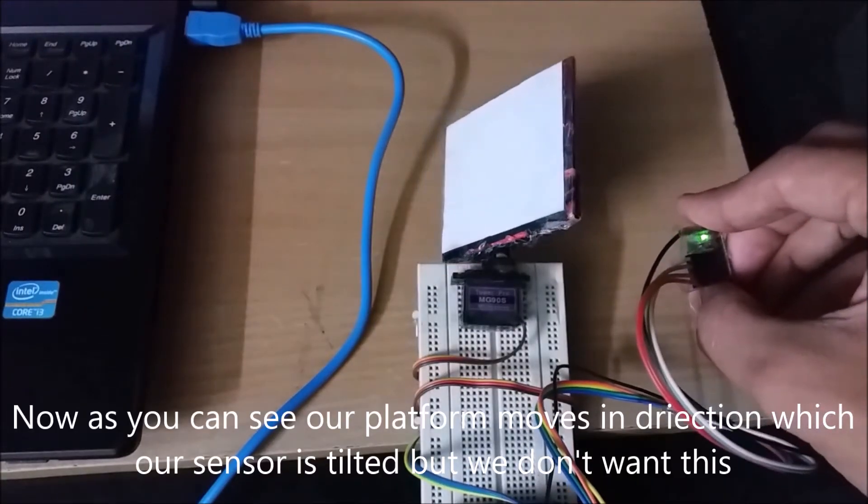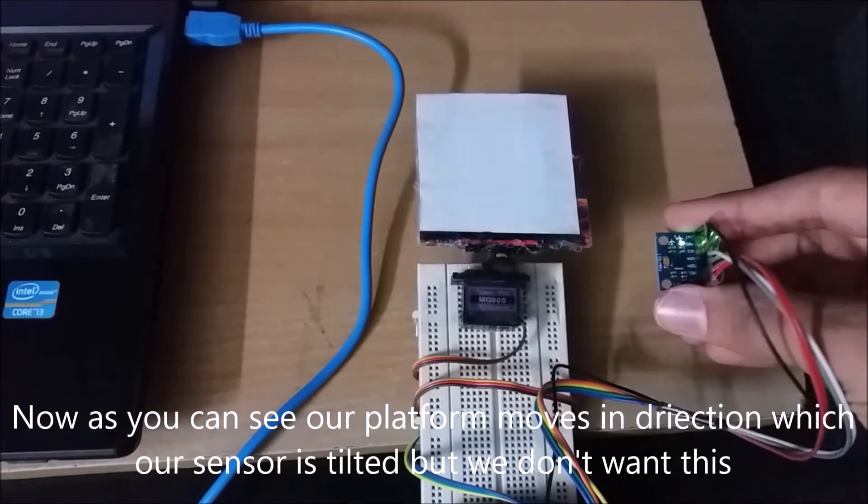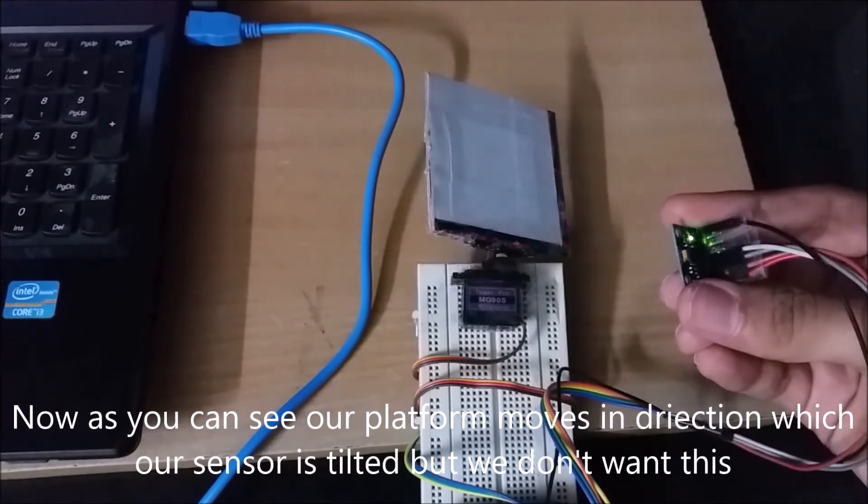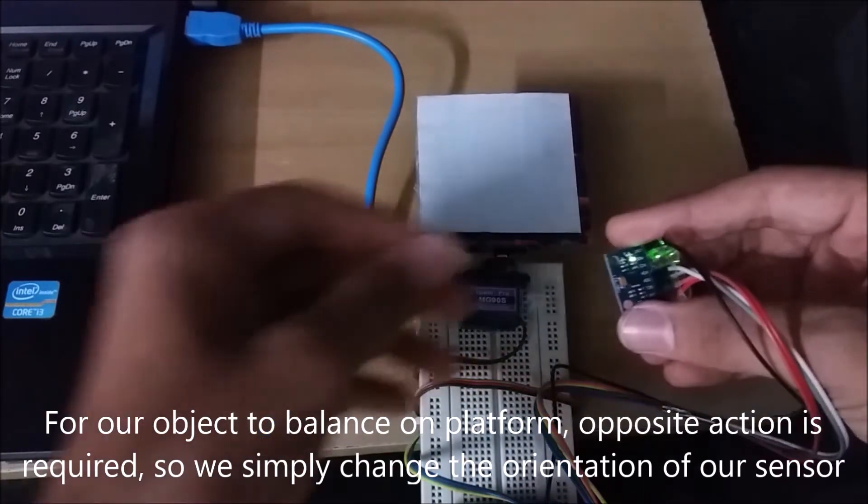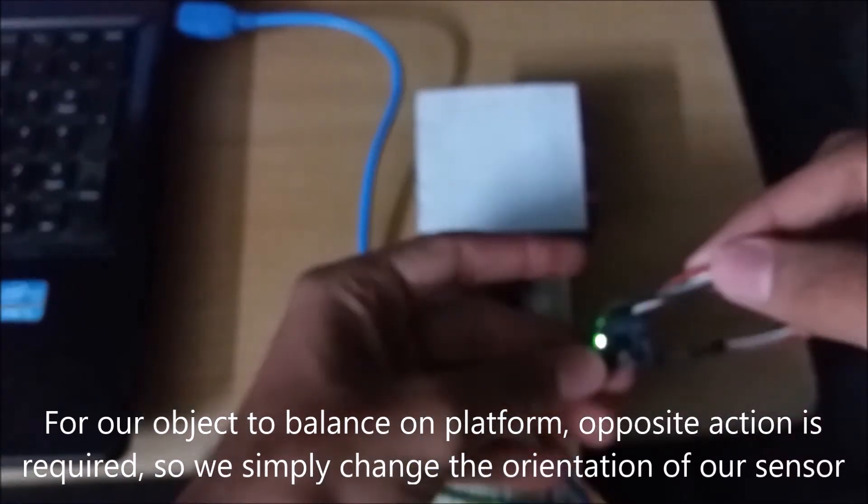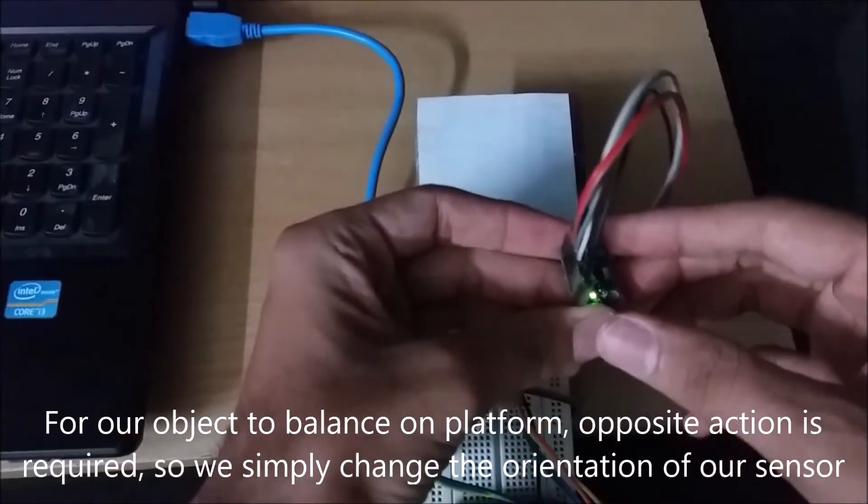Now as you can see our platform moves in direction which our sensor is tilted but we don't want this. For our object to balance on platform, opposite action is required.